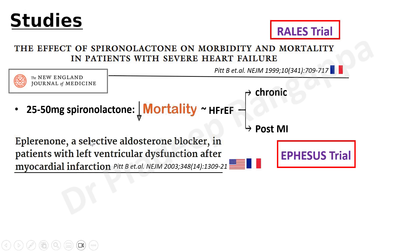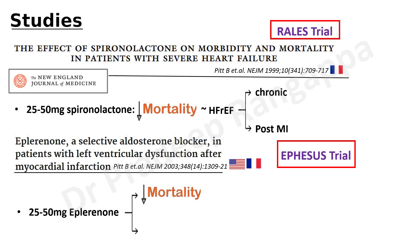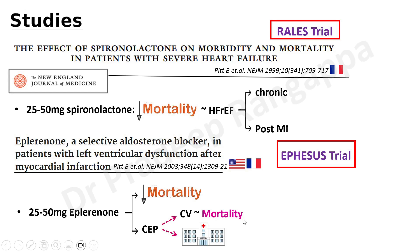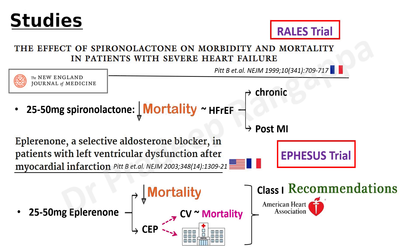The EPHESUS trial examined eplerenone as a selective aldosterone blocker in patients with LV dysfunction after MI, published in NEJM in 2003 by Pitt B et al. Using 25 to 50 mg eplerenone, it significantly reduced mortality and the composite endpoint of cardiovascular mortality and hospitalization. Based on this trial, there was a Class I recommendation for incorporating eplerenone by the American Heart Association, American College of Cardiology, and European Society of Cardiology.